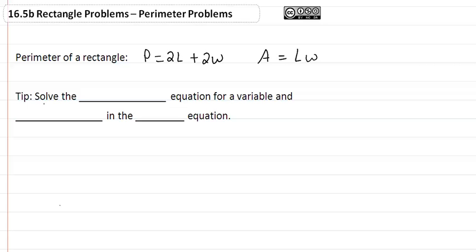One thing that you'll need to keep in mind when solving these is that you want to solve the perimeter equation for a variable, and then substitute that variable in the area equation. So we're going to be using both equations here.